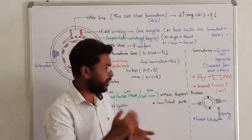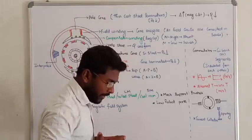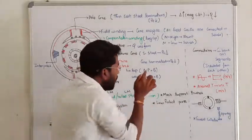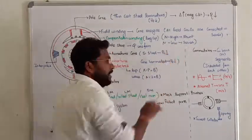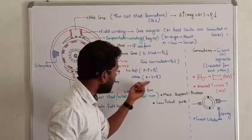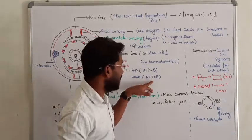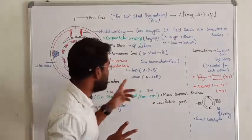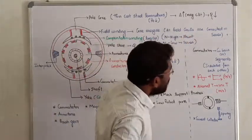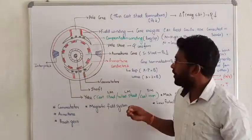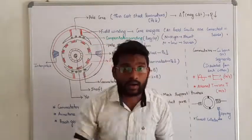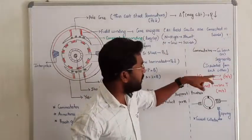We are going to discuss about these things one by one. Just remember, there are two types of winding arrangements: lap winding and wave winding. Based on the construction, we will see how each one is possible. Now let us discuss about the commutator. The commutator segments are copper bars. Each copper bar element is insulated from the others — all segments of the commutator are insulated from each other.